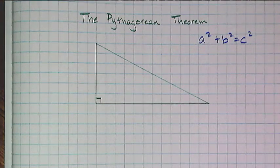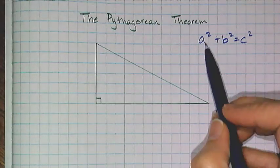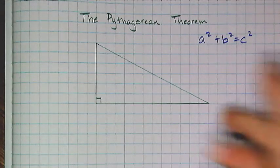So if I asked you what the Pythagorean Theorem is, many people are just going to shout out a squared plus b squared equals c squared, and that's not actually the theorem.